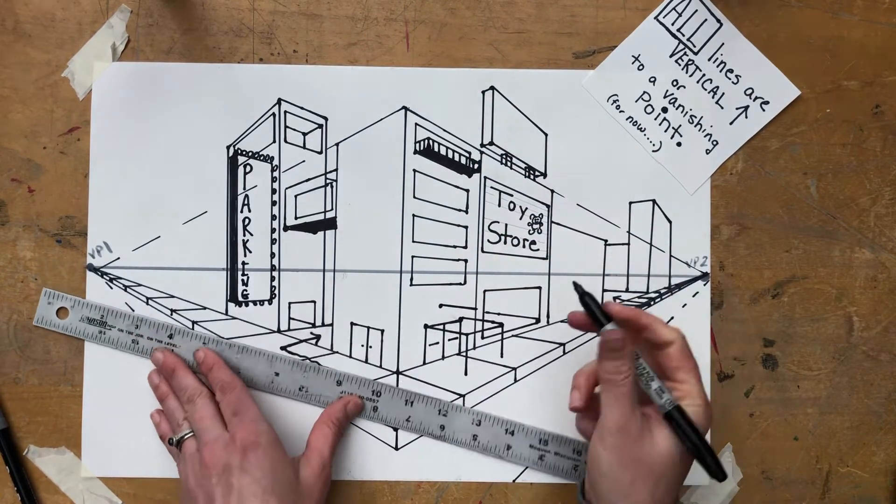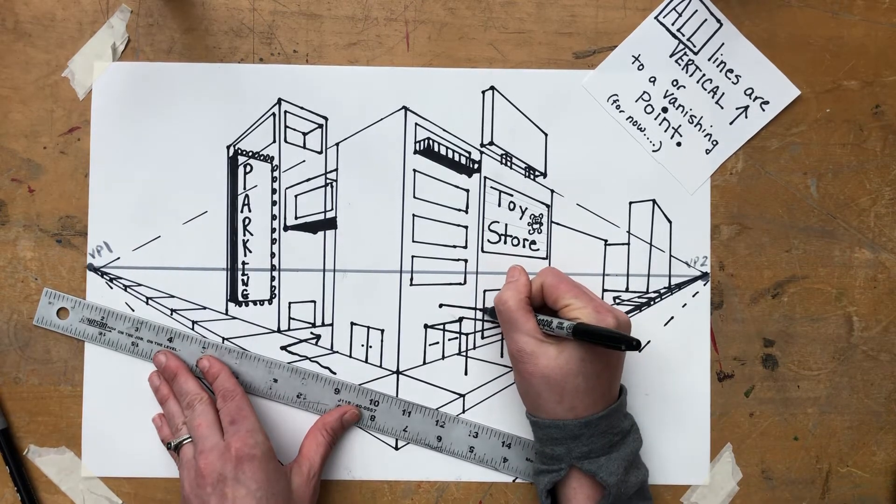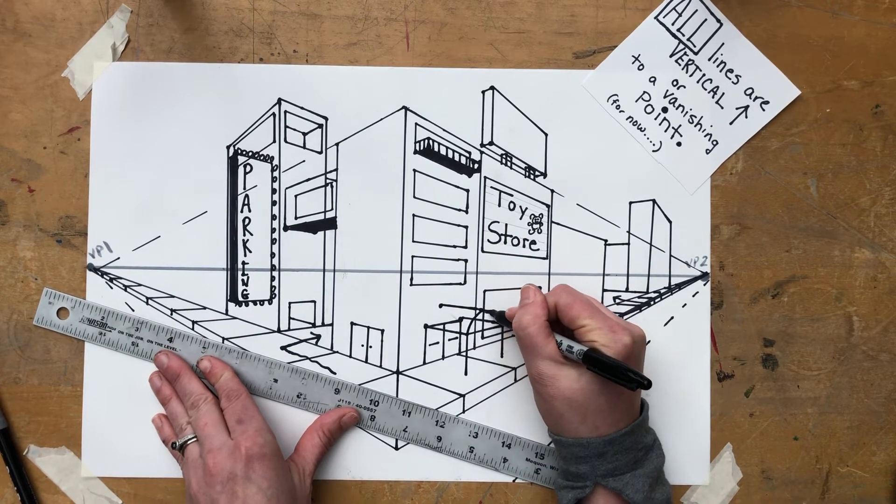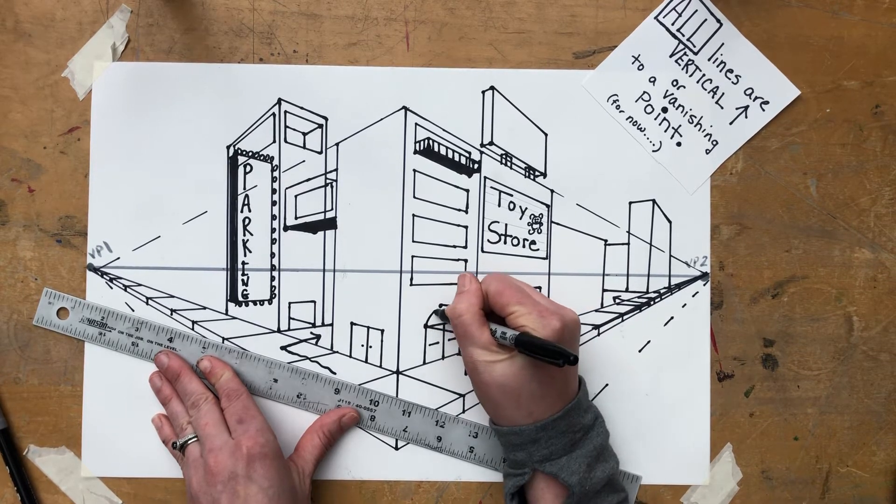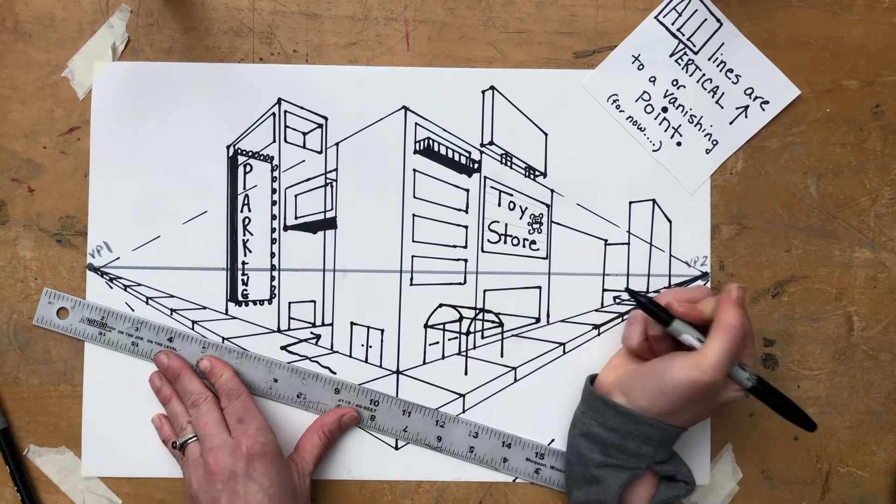I'm going to go to VP1. Kind of have an arm coming out like that. And now I can make a curve that connects these dots to make kind of a curved awning like that.